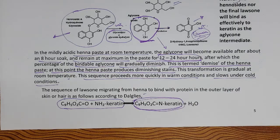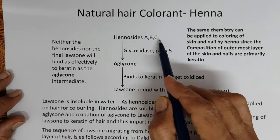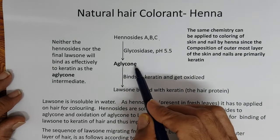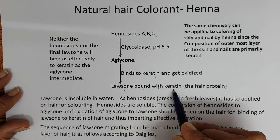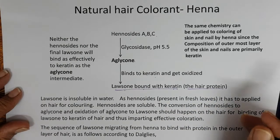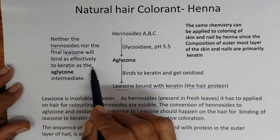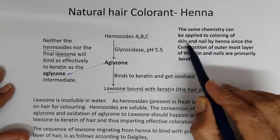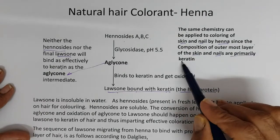To summarize: hennosides A, B, and C, in the presence of the enzyme glycosidase at pH 5.5, get converted to the aglycone. This aglycone binds to keratin and gets oxidized, yielding lawsone bound with keratin — keratin being the hair protein. Neither the hennosides nor the final lawsone will bind as effectively to keratin as this aglycone intermediate. The same chemistry applies to coloring skin and nails, since the outermost layer of skin and nails is primarily keratin, like hair.